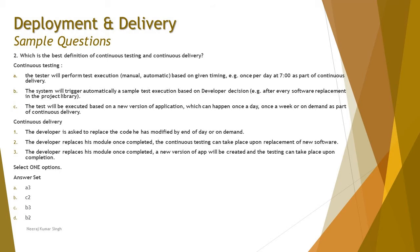Recalling the continuous testing concept: it is about executing tests automatically so that execution can happen even when people or resources are unavailable, and the collaboration between developer and tester decides the timing and trigger of execution. Based on this, the right answer for continuous testing is B — the system will trigger automatically a sample test execution based on developer decision. Now let's look at the continuous delivery part.